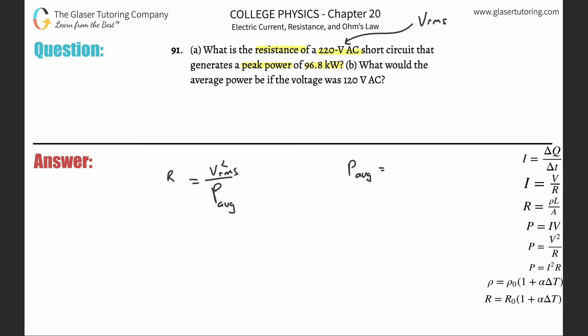The average power will be equal to the peak power divided by two. That's it. So the average power is going to be equal to the peak power of 96.8 kilowatts—you need that in watts, so just multiply it by 10³—divide that by two. Take this result and now you're going to plug it in.